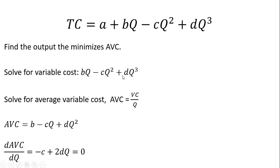Once we get variable cost, we can now solve for average variable cost. Average variable cost is the variable cost divided through by Q. So BQ divided by Q is B, minus CQ squared divided by Q is minus CQ, and DQ to the third power divided by Q is just DQ squared. So we get average variable cost.